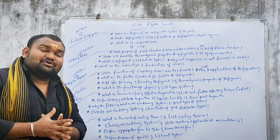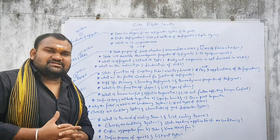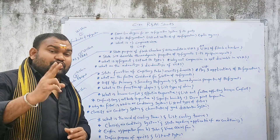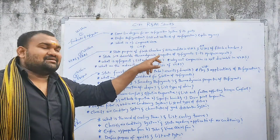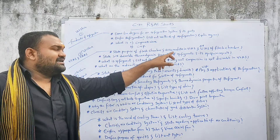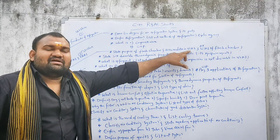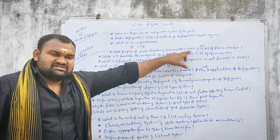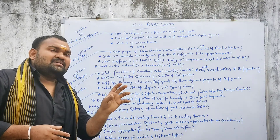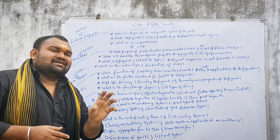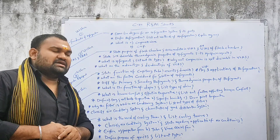The second chapter is the Vapor Compression Refrigeration System and Vapor Absorption Refrigeration System. State the purpose of Flash Chamber and Accumulator in Vapor Compression Refrigeration System (VCRS). The Flash Chamber and Accumulator are used in the Vapor Compression Refrigeration System.